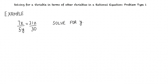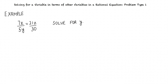Let us consider an example. We are required to solve for y in the following expression: 7x divided by 5y equals 21z divided by 30. There are three variables x, y, and z involved in this problem. Since we are asked to solve for y, we must obtain y in terms of x and z.